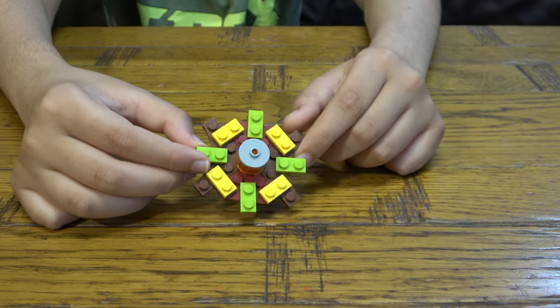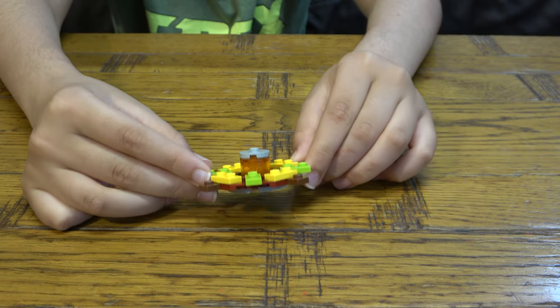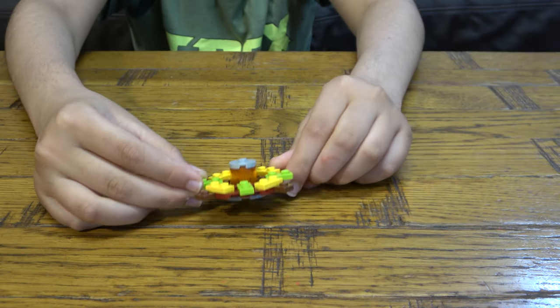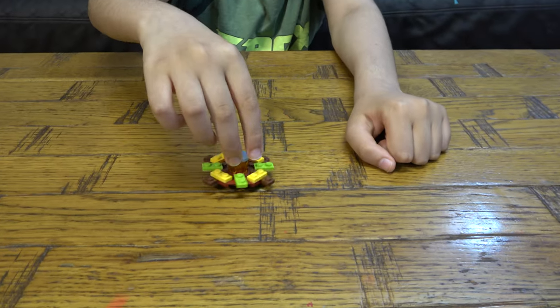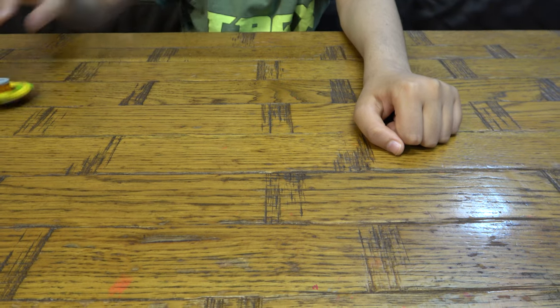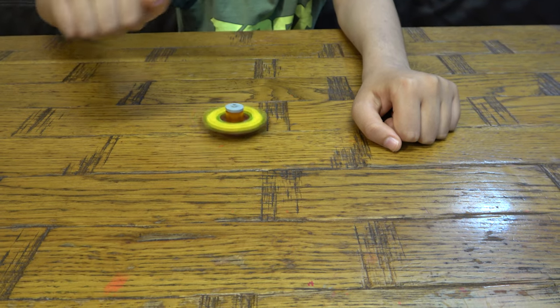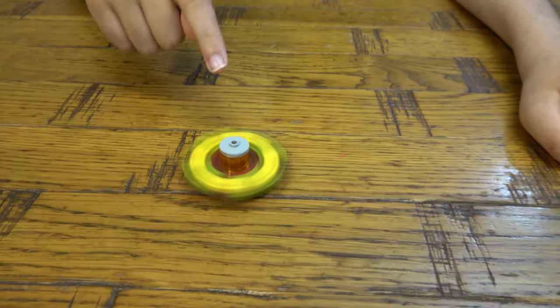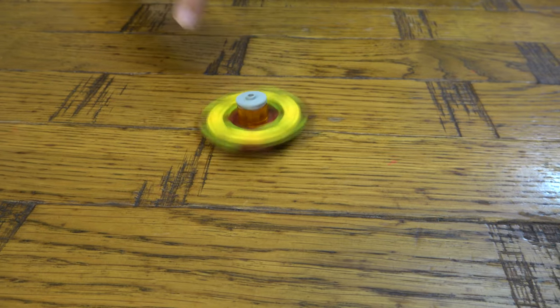So here is the Beyblade, so let's spin. See, there's like an inner ring and an outer ring of green over the yellow.